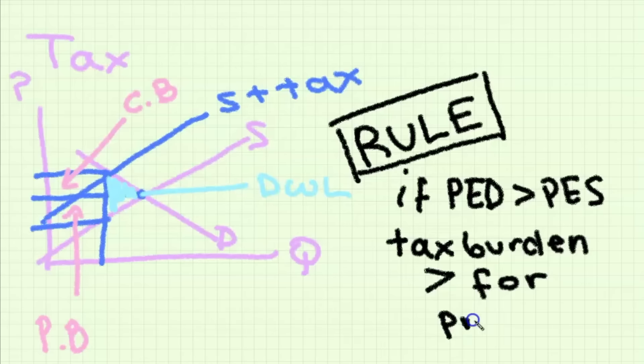Basically what the producer and consumer have to pay in terms of the proportion of the tax. The rule is that if PED is more elastic than price elasticity of supply then the producers will bear a greater proportion of the tax burden.